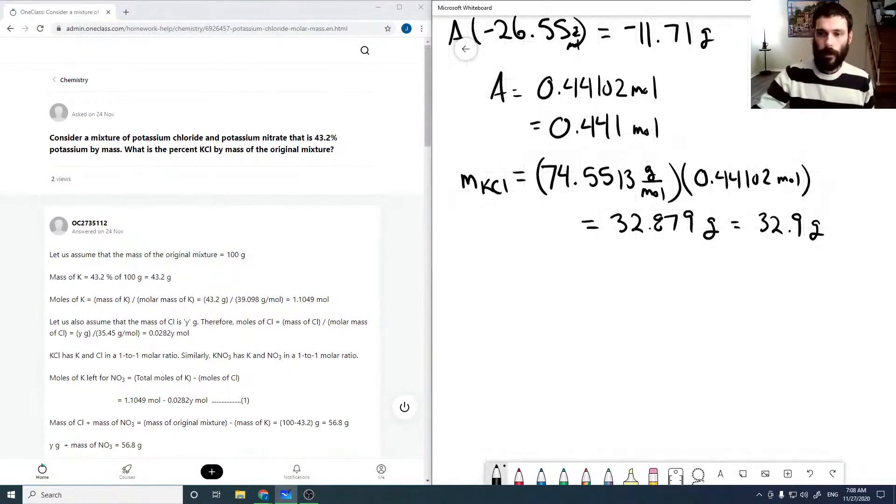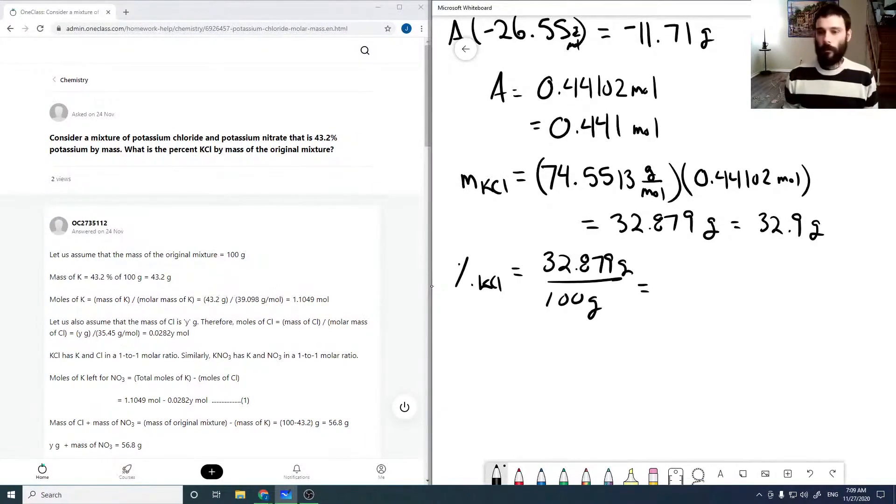So again, we're just assuming that 100 grams, but that's fine because we're looking for a percentage, right? So our percent KCl is just this mass amount, 32.879, over our full, which is 100 grams, and then multiply by 100%, which is 32.9% rounded to our three significant digits. Okay, so that's our mass percent of KCl. So that's our final answer.